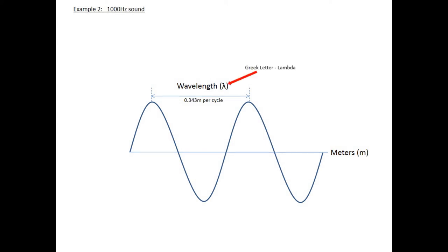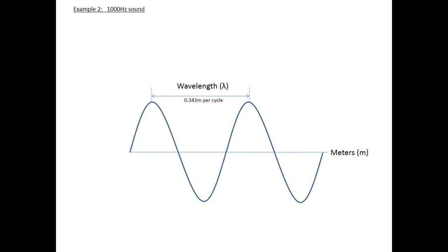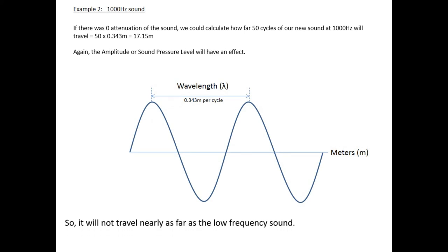Our second example that we have is a 1000 hertz sound. Now, that is quite significantly higher than a 50 hertz sound. So now, for this sound, if I use 1000 hertz, I do the calculation, I can see that it now travels about 0.343 meters. Now, that is quite significantly different from the 6.86 meters. And this should actually now give you an indication of what will happen to a higher frequency sound. If one sound now only travels 0.343 meters, how far will 50 of our cycles travel? And if we do that calculation, we get to 17.15 meters. It will not travel nearly as far as your low frequency sound.